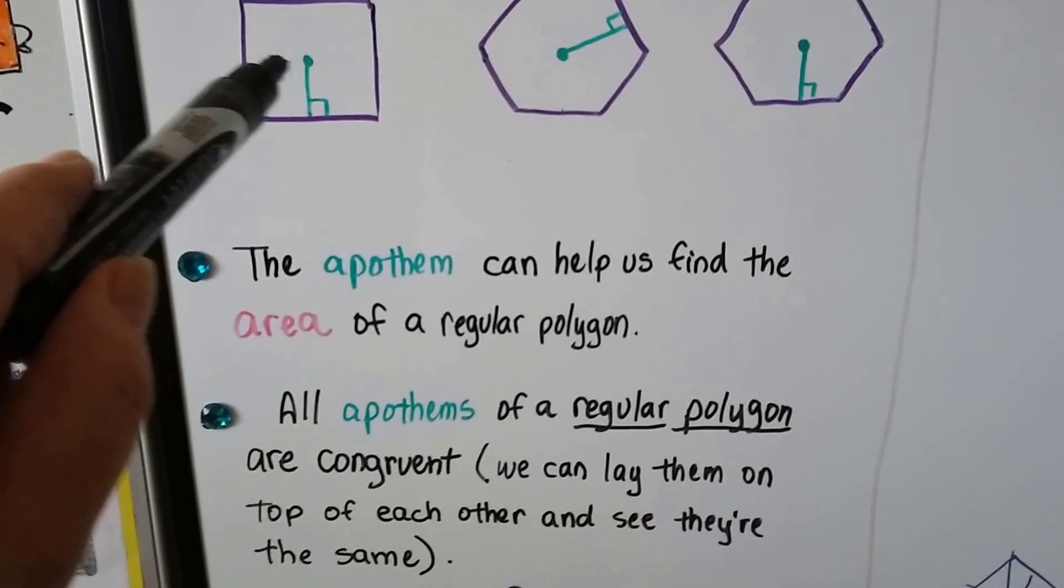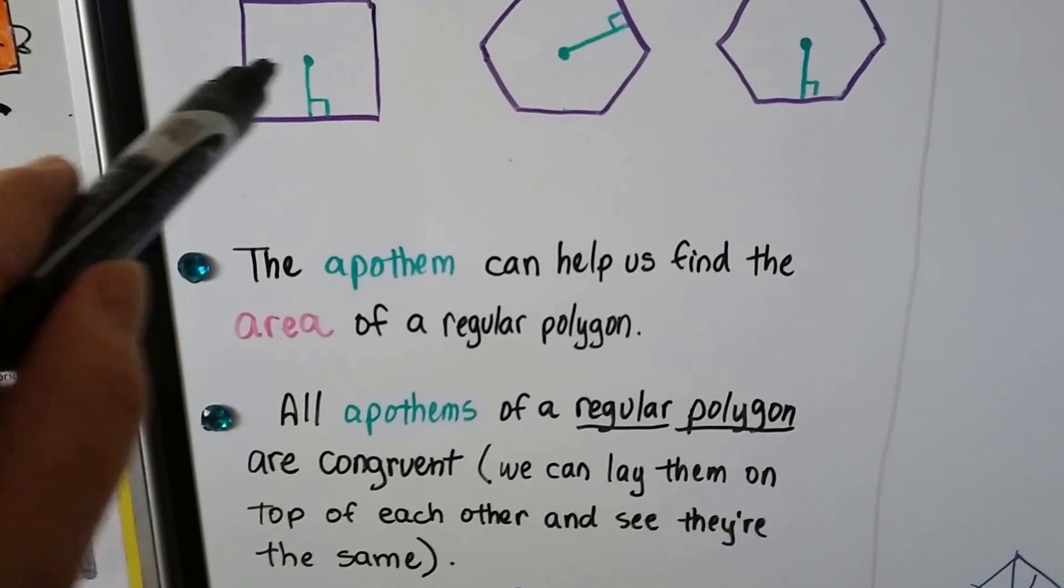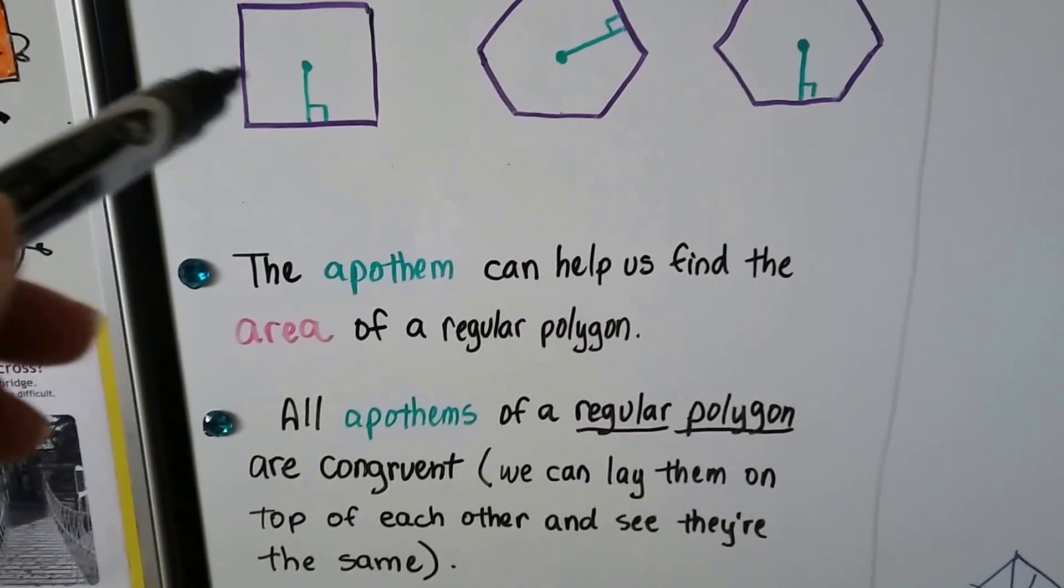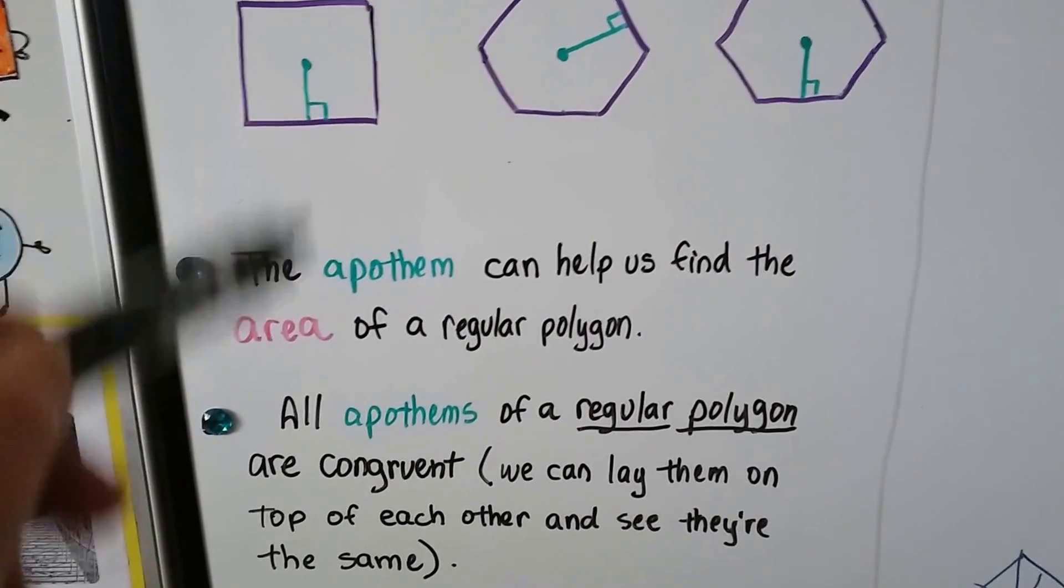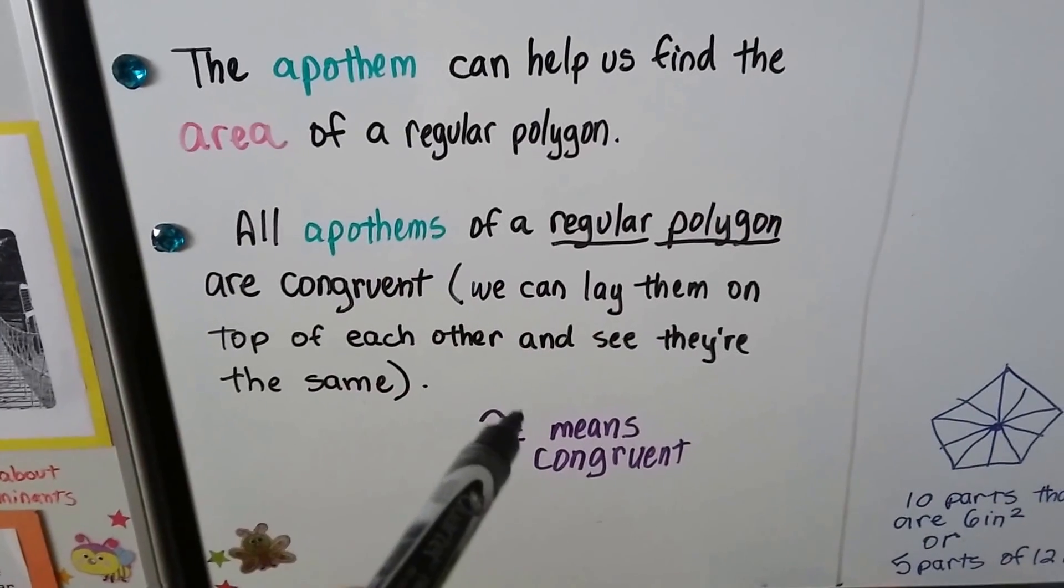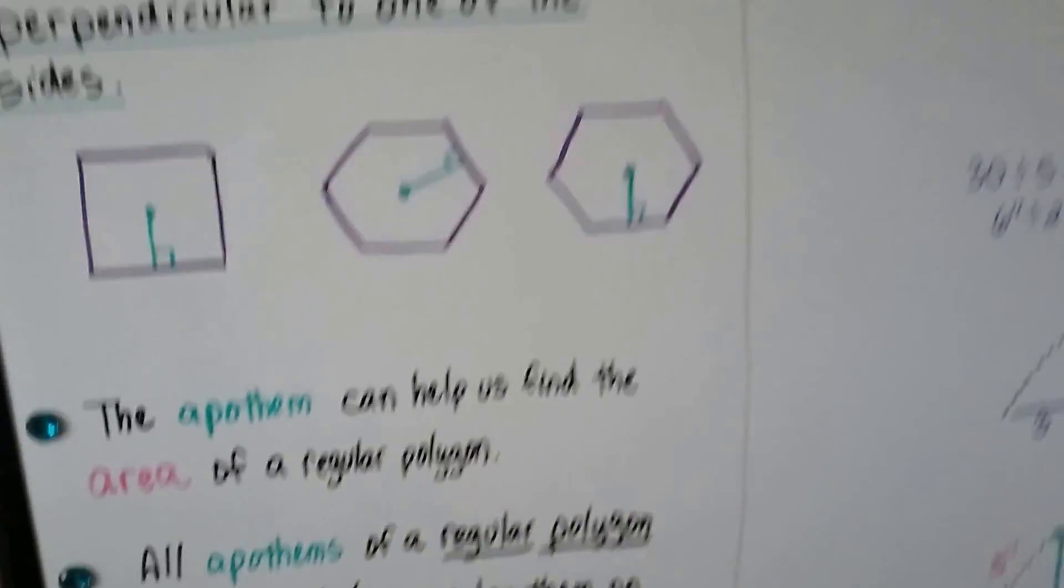So the apothem that would be going this way would be the same length as this one because it's a regular polygon, it's got all equal sides. So each apothem would be equal to that one. And just remember that the equal sign with the little swirly line means congruent in symbols.